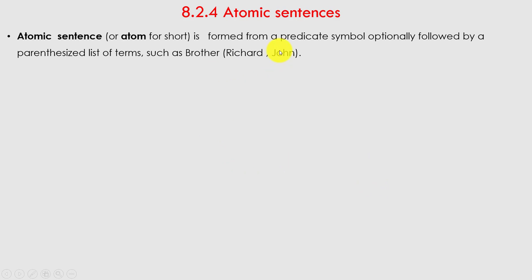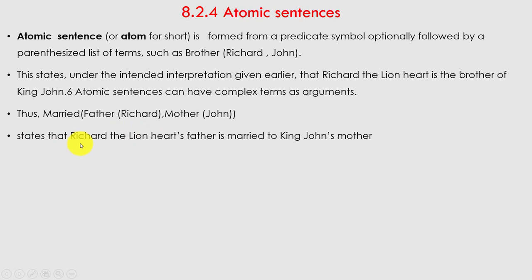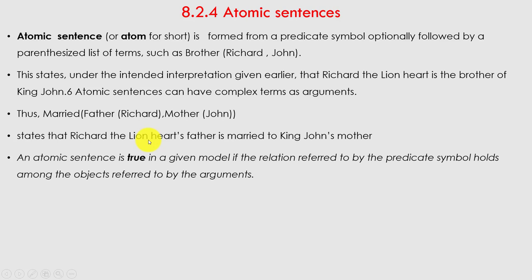An atomic sentence is formed from a predicate symbol optionally followed by a parenthesized list of terms — such as Brother(Richard, John) — which states under the intended interpretation that Richard the Lionheart is the brother of King John. Atomic sentences can have complex terms as arguments: Married(Father(Richard), Mother(John)) states that Richard the Lionheart's father is married to King John's mother. An atomic sentence is true in a given model if the relation referred to by the predicate symbol holds among the objects referred to by the arguments.